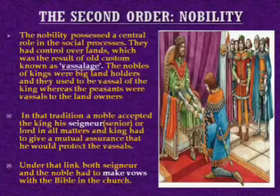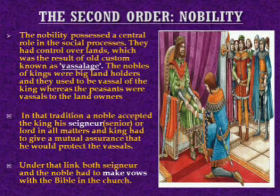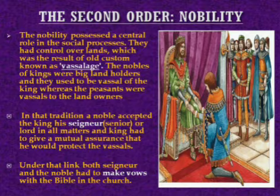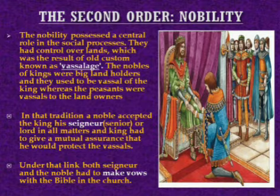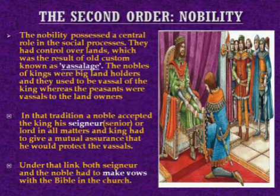The noble possessed a central role in feudal society. They had control over lands, which was the result of an old custom known as vassalage. Basically, a vassal was a person who is subordinate to another. The vassals received protection and land from a lord in return for allegiance and performing military services and many other duties as well.